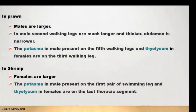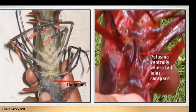How to identify the sexes in shrimp and prawn: In prawn, males are usually larger. In males, the second walking legs are much longer and thicker, and the abdomen is narrower. The petasma in males is present on the fifth walking legs, and the thelycum is on the third walking leg. In shrimp, females are usually larger. The petasma in males is present on the first pair of swimming legs, and the thelycum in females is on the last thoracic segment. By this picture we can easily identify which is male and which is female by the presence of the petasma (male sexual organ) and the thelycum (sperm receptacle organ) in females.